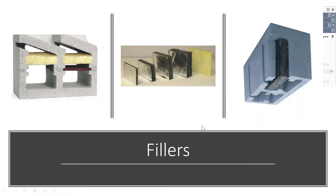All acoustical masonry units come with factory-installed acoustical fillers. The resonators are structured to absorb mid to low frequencies. By inserting semi-rigid fiberglass baffles within the units, the resonator is baffled and the resonant frequency absorption is broadened at middle and high frequencies, making it a complete package.